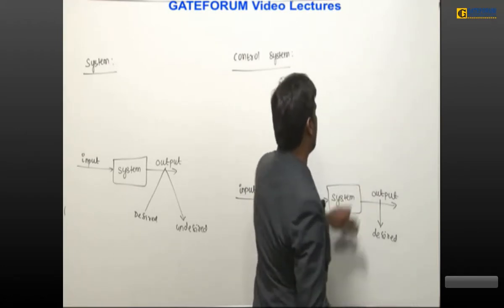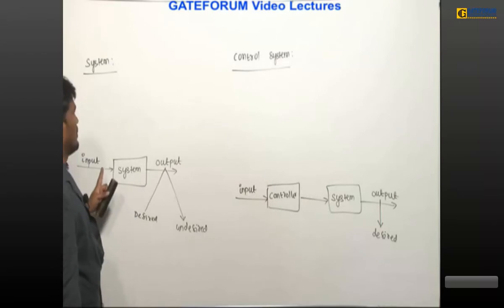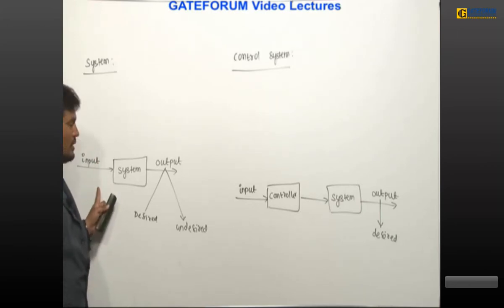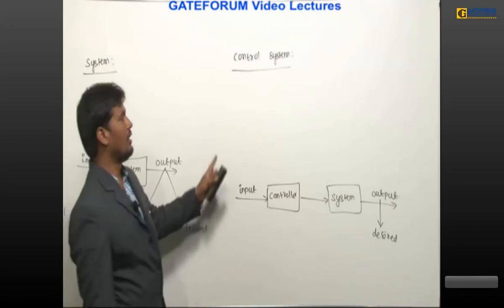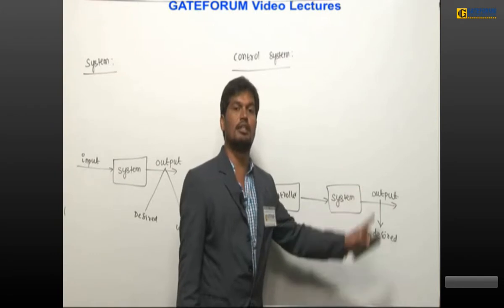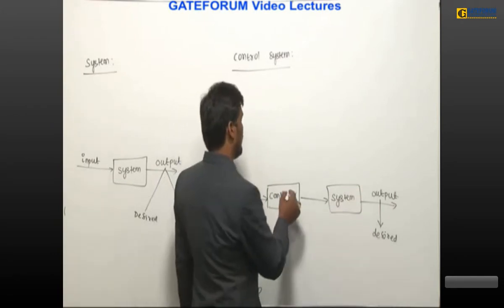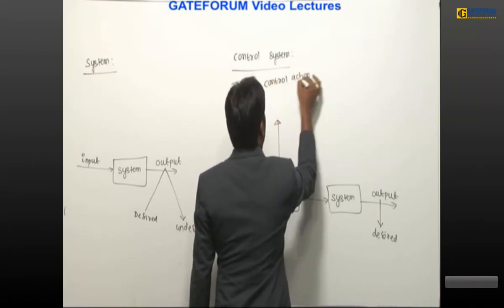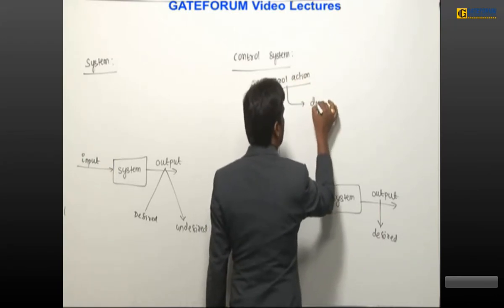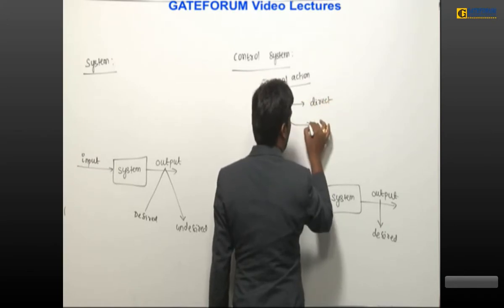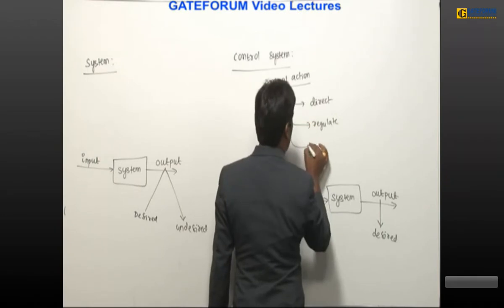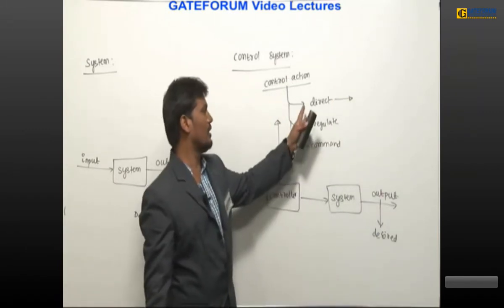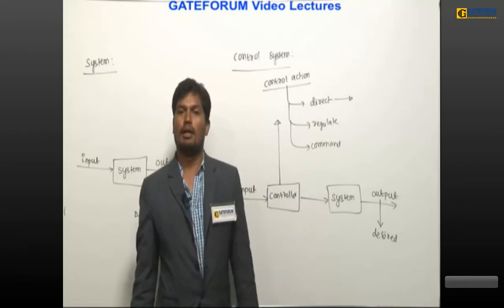Now the basic difference between system and control system: in a system, control action is absent, so output may be desired or undesired. In a control system, due to control action, the output is definitely desired. Control action means: to direct the system, or regulate the system, or command the system.